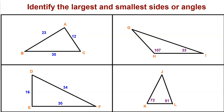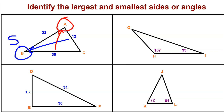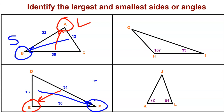In the top left corner, we have side lengths of 12, 23, and 30. The side opposite 12, the shortest side, gives the smallest angle, and the angle opposite 30, the longest side, is the largest angle — so angle B is the smallest and angle A is the largest. Moving to the bottom left, our side lengths are 16, 30, and 34. Since 34 is the largest side, angle E is the largest angle, and since 16 is the shortest side, the angle opposite it — angle F — is the smallest angle.